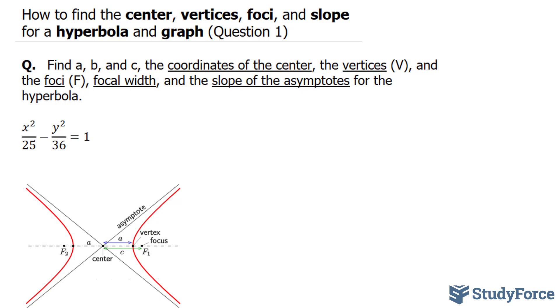That being said, we need to find a, b, and c. a can easily be found from the formula. Your a term always represents the square root of the positive denominator. So in our case, the positive variable is x, so your a will be the square root of 25. We have a squared is equal to 25. Square rooting both sides, we end up with a is equal to plus minus 5.